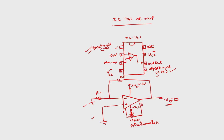This is about the DC characteristics of the practical op-amp. Similarly, a practical op-amp has AC characteristics such as slew rate, which we will discuss in the next lecture. Thank you.